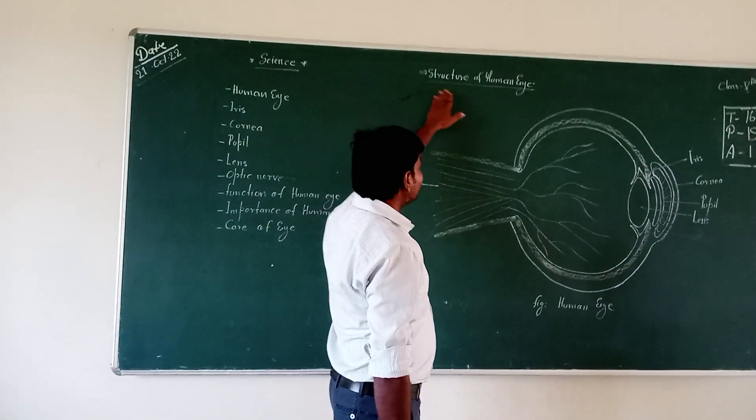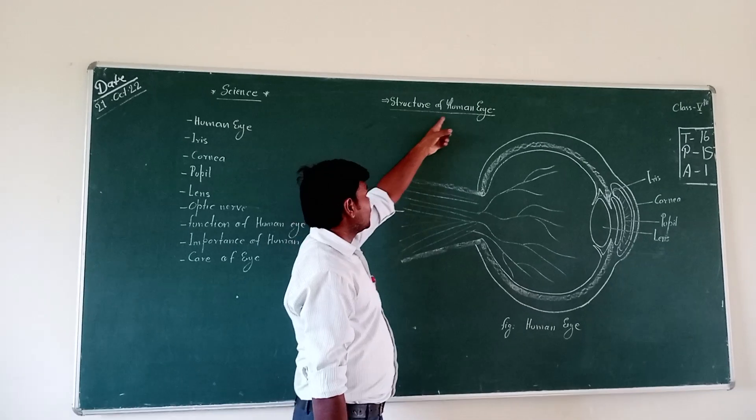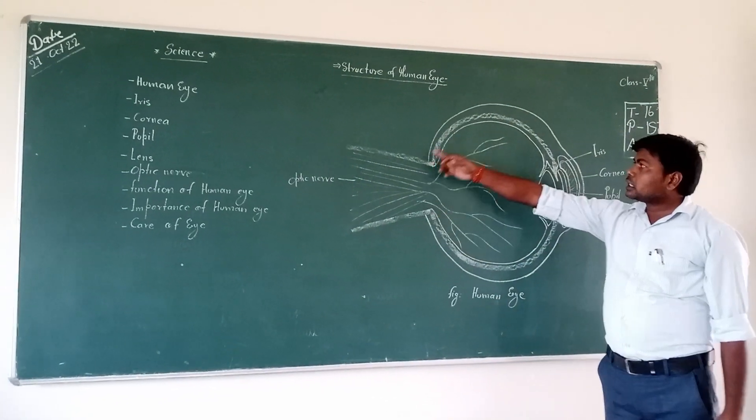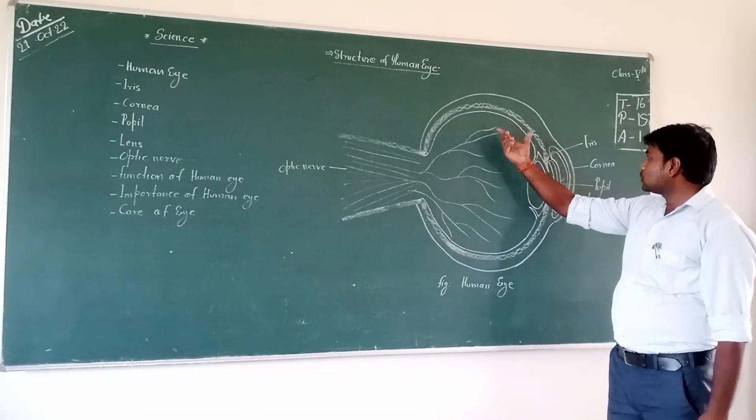We are learning here the study of human eye, such structure of human eye, like this green board. So all the proper shape and size structure will be in this green board.